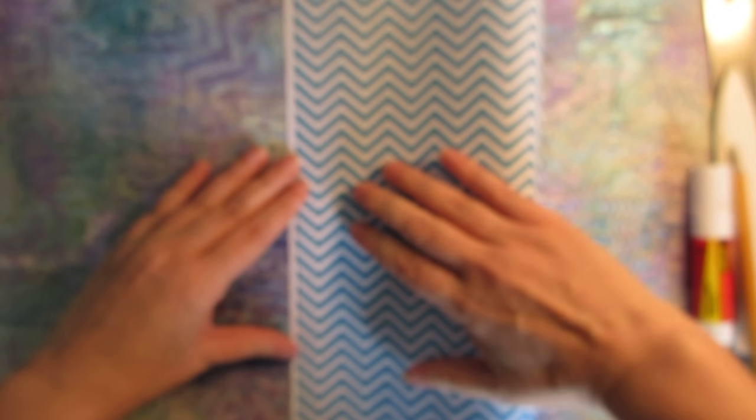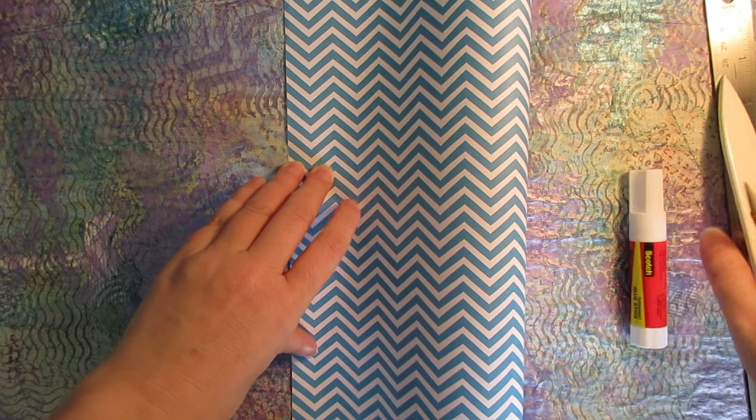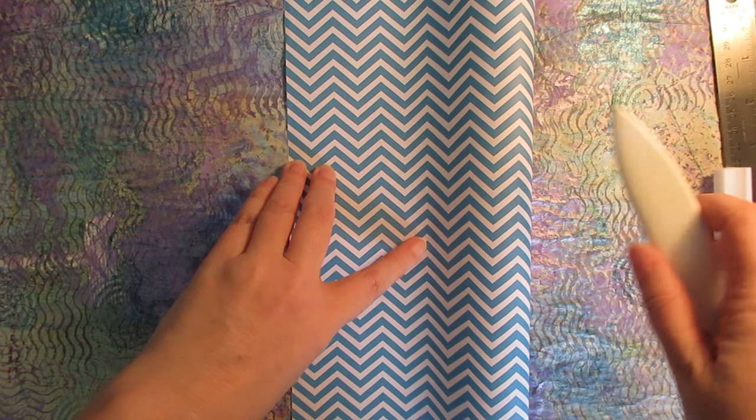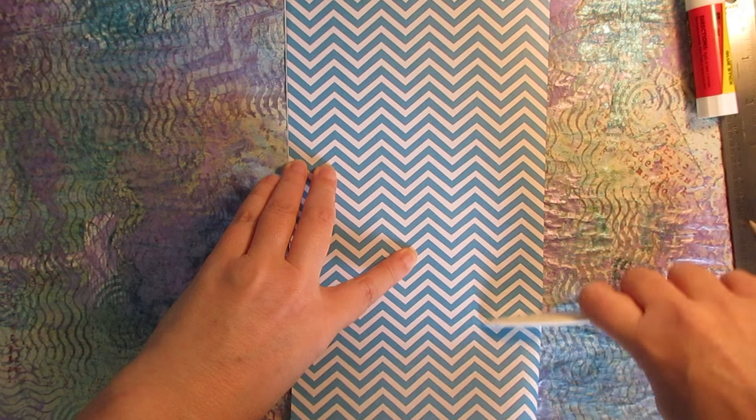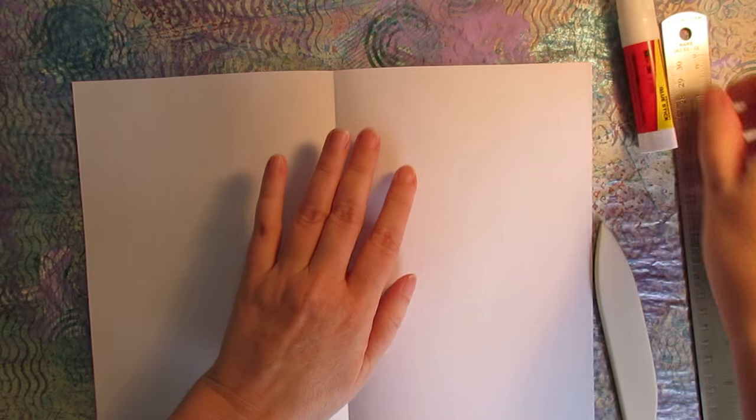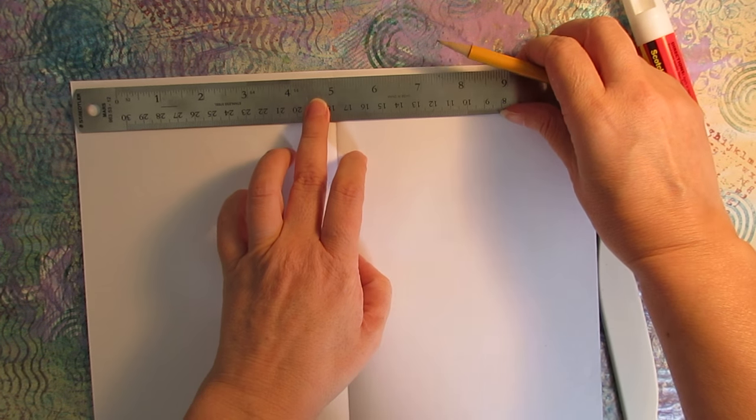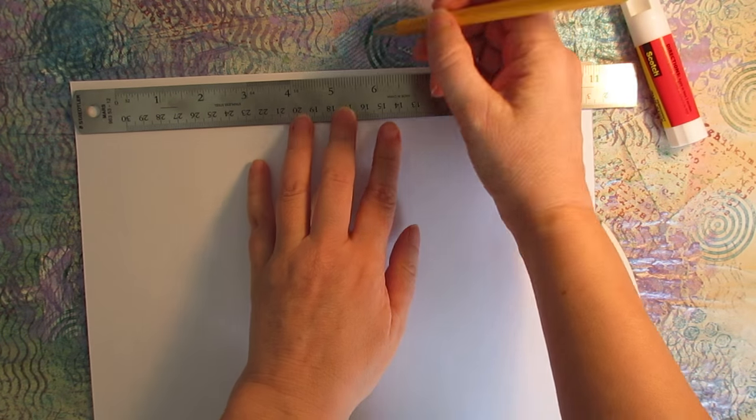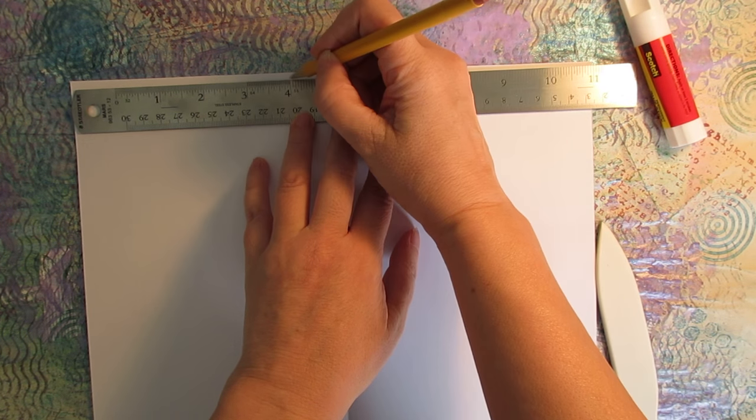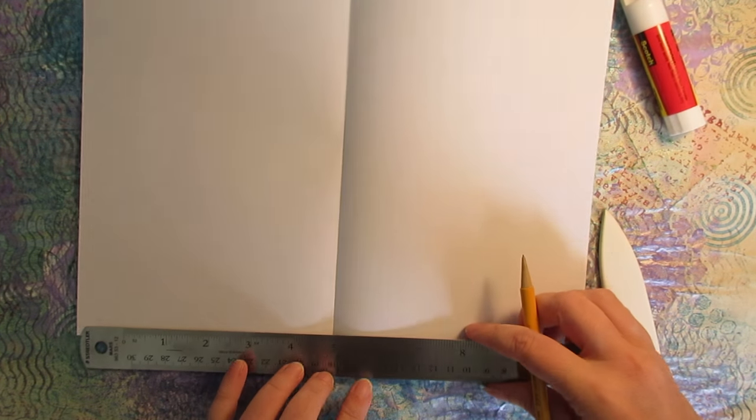All you need to do is fold your paper in half, use your bone folder, open that up, and measure one inch on either side of the fold that you just made, and make a little mark on the top and the bottom.